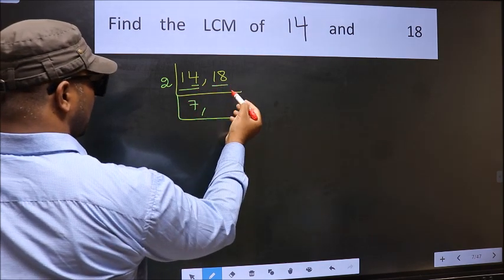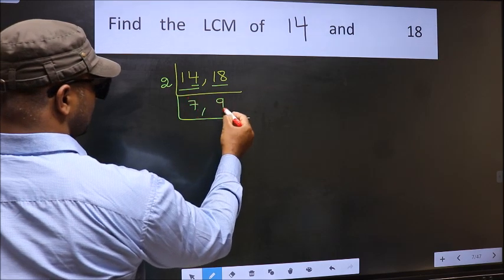Now the other number 18. When do we get 18 in 2 table? 2 times 9 is 18.